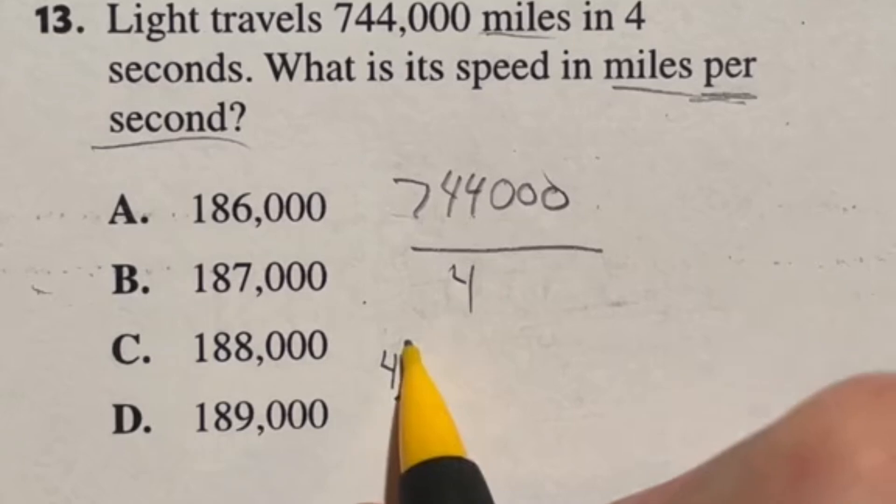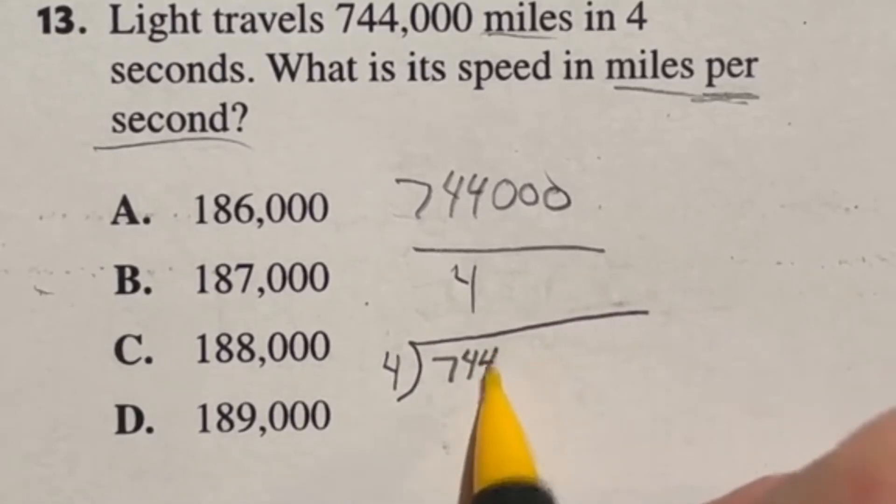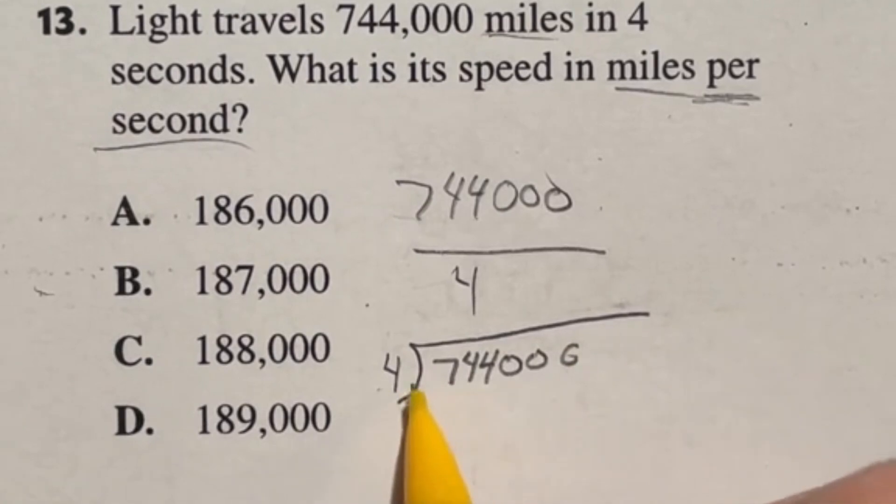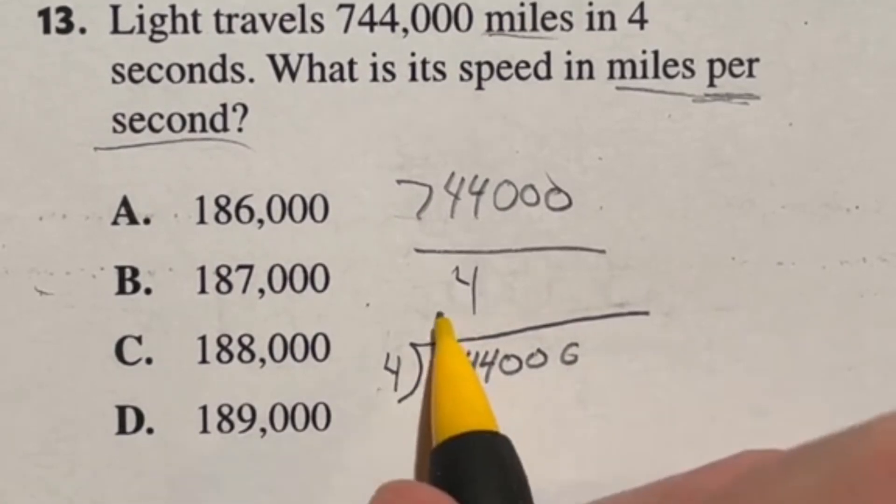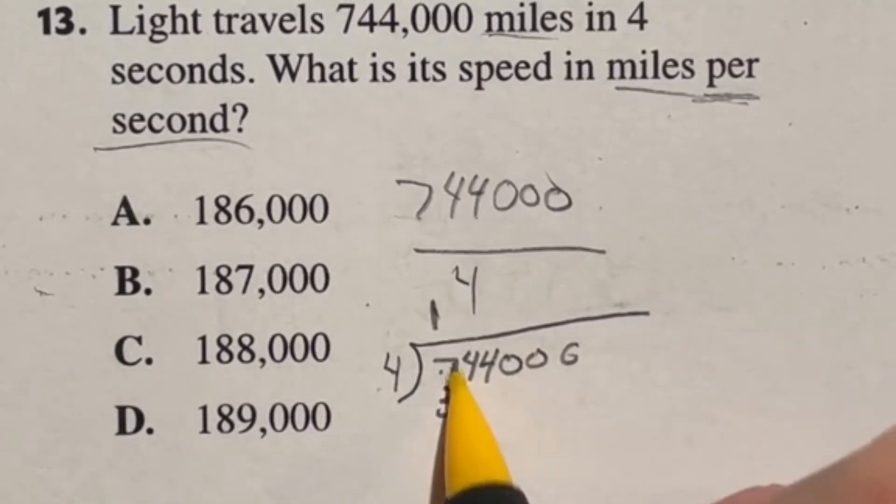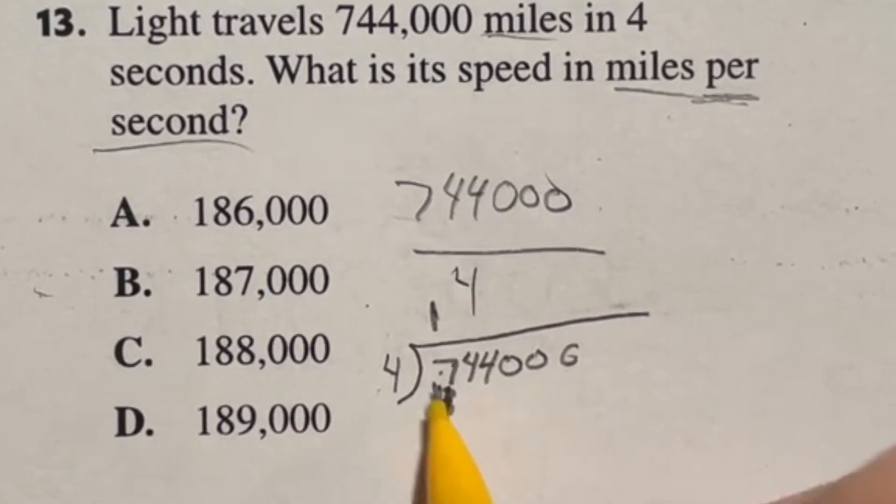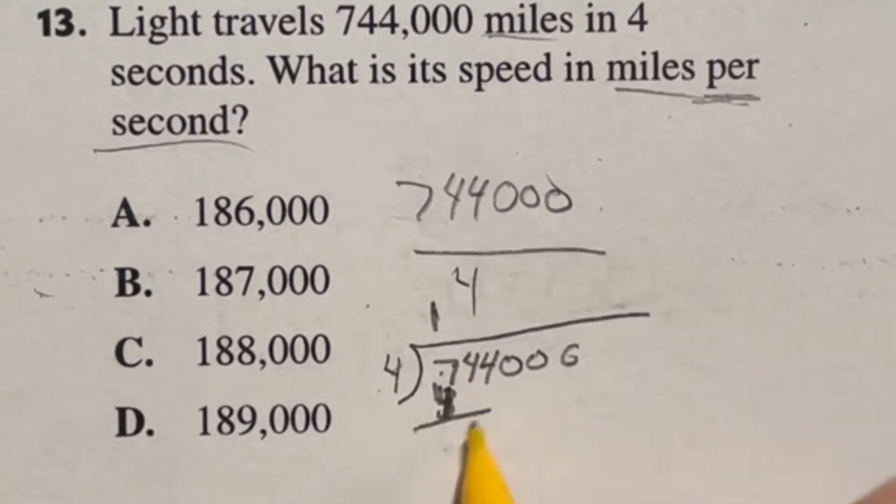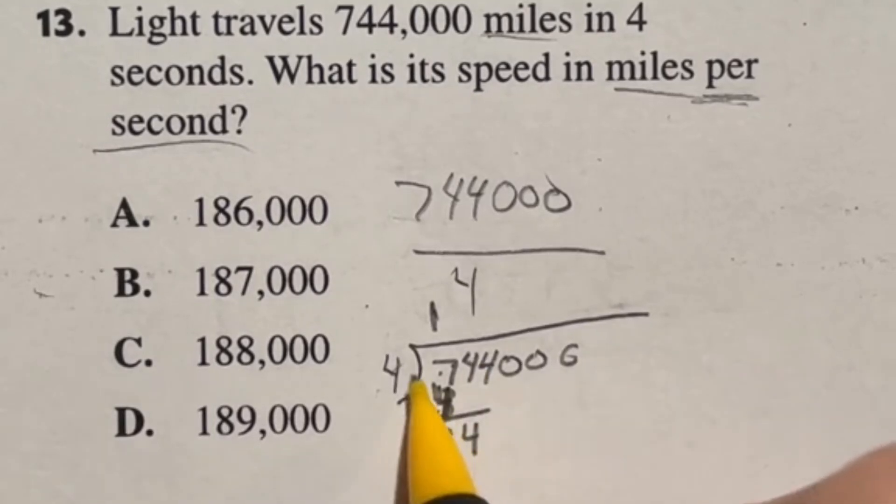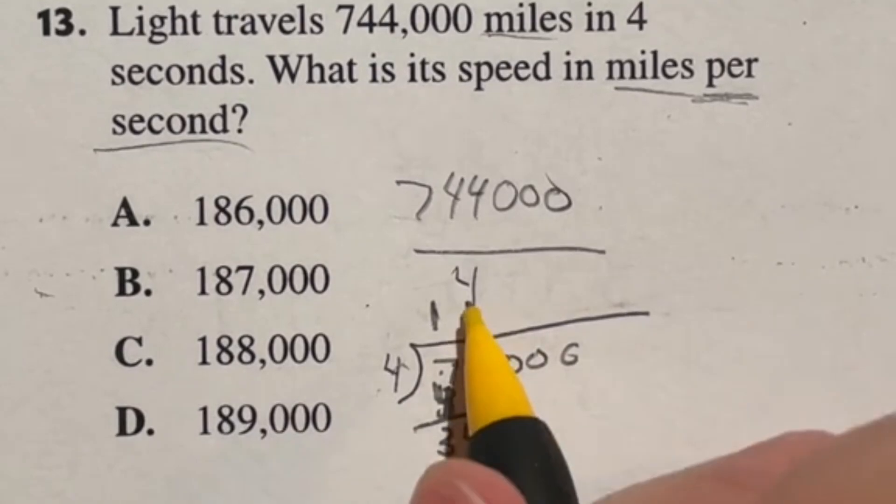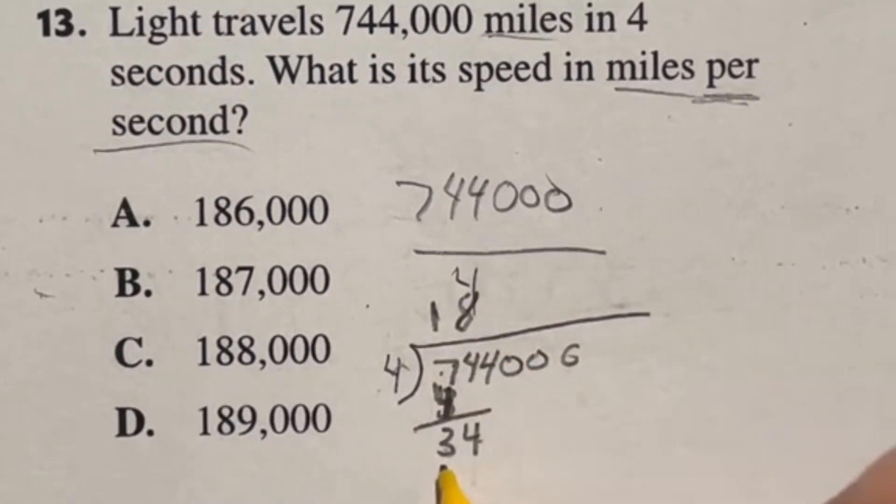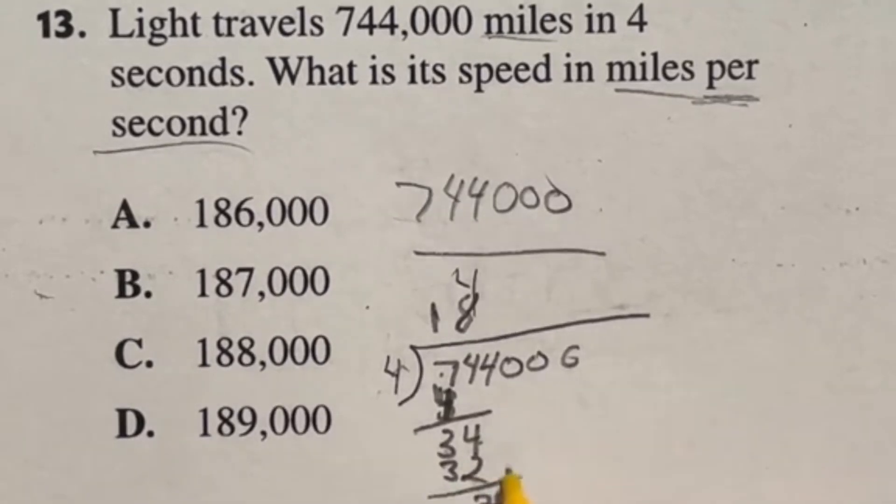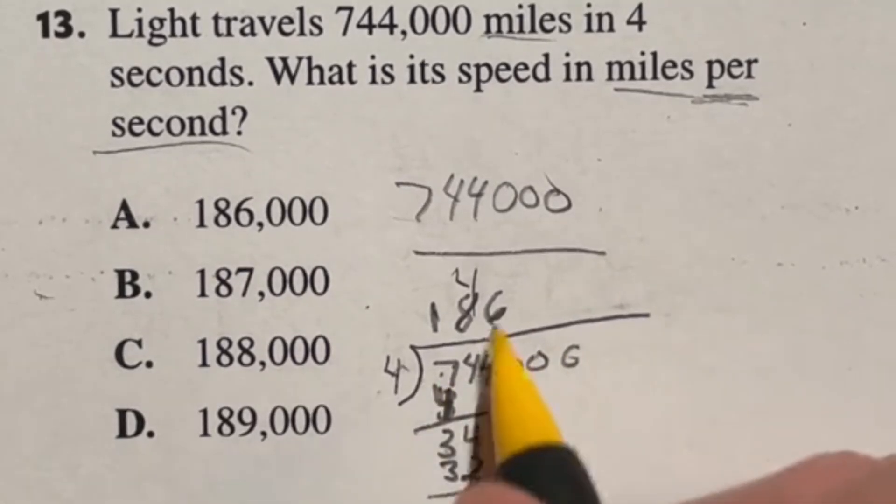We're going to do this the long division way, because remember for the ASVAB, you do not have a calculator. So let's just see what this looks like long division. Four goes into seven one time with three left over. So we do seven minus, or sorry, we have the four there four times one, seven minus the four gives us three left over. There we go. Bring the four down. Four goes into 34 eight times, eight times four is 32. And then we still subtract there and have the two left over. Bring down the four, four goes into 24 six times. And that actually is 24. So we'll have zero left over.